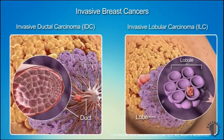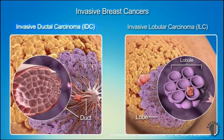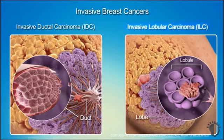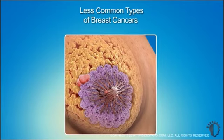Invasive breast cancers spread from their origin into other breast tissue and possibly to other parts of the body. About 80 percent of invasive breast cancers start in the ducts and are therefore called invasive ductal carcinomas. Invasive cancer that starts in the lobules, called invasive lobular carcinomas, accounts for around 10 to 15 percent of invasive breast cancer. Less common forms include tumors that are a mix of both invasive ductal and lobular carcinomas.